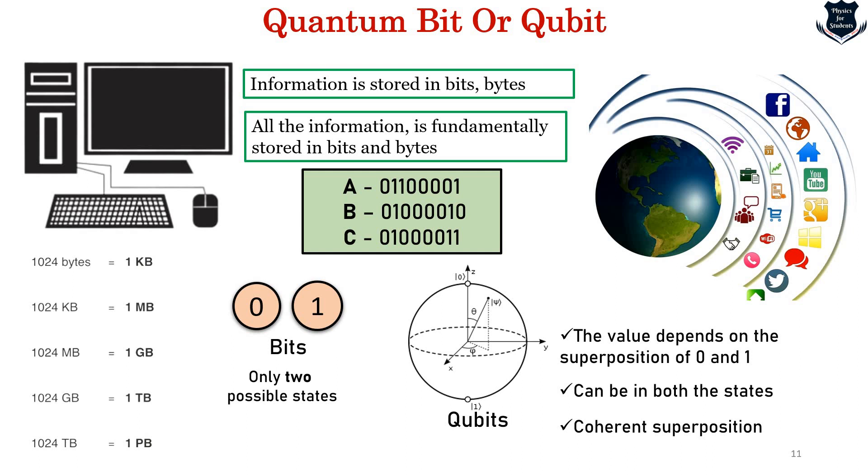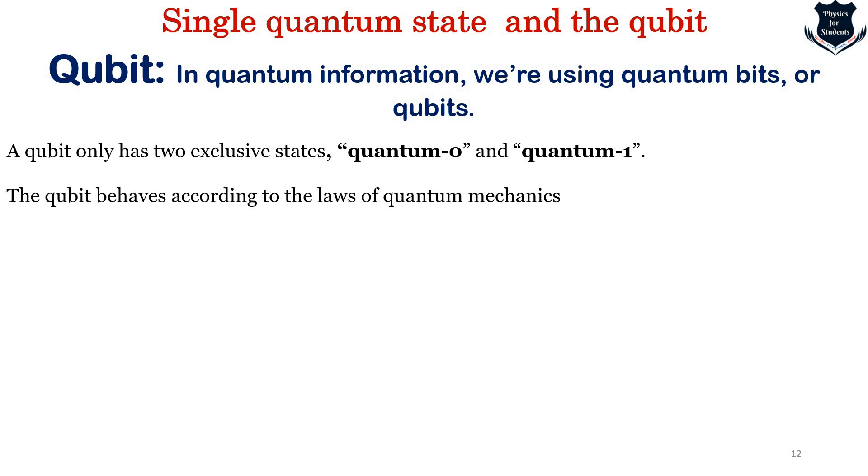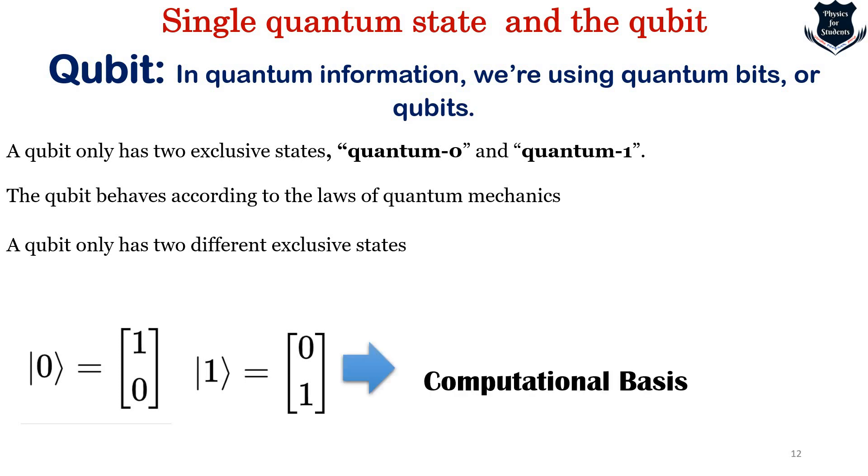Let us look into how do we write the qubits in mathematical terms. In quantum information we are using quantum bits. Like a classical bit, a qubit has two exclusive states - quantum 0 and quantum 1. The qubit behaves according to the laws of quantum mechanics. Since a qubit has two different exclusive states, the state or vector representing the quantum 0 and quantum 1 is written as this. It is obviously two-dimensional. The vector 0 and 1 are actually represented by this - this is what's known as computational basis. This one is quantum 0 and this is for quantum 1.